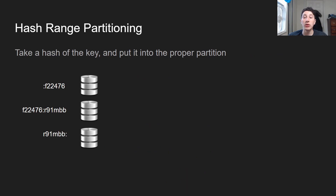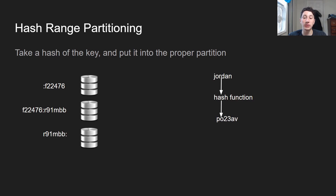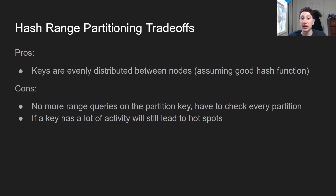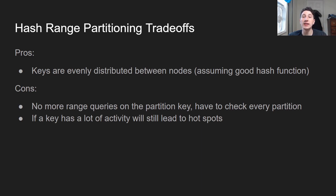Let's look at hash range partitioning. All we're doing here is taking a hash of the key and putting it into the proper partition. Below you'll see I have three databases. The first one has all keys with a hash up to F22476. The second database has all of the hashes from F22476 to R91MBB. And then the last database has everything else. So let's say I want to take the key Jordan, hash that, and put it into a proper database — I pass it through a hash function, get the result, and as you can see, it's going to go into database 2 because that's the range it belongs in. The biggest pro is that keys are going to be evenly distributed between nodes, assuming there's a good hash function — it's pretty easy if you just use SHA or something like that. The biggest con is that you can't do range queries anymore. If two keys that are next to each other alphabetically hash to very different values, there's no guarantee they'll be on the same partition, and a range query might touch every single partition, which would be very inefficient.